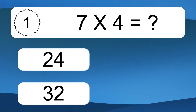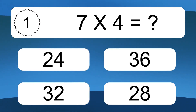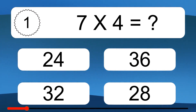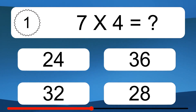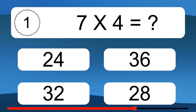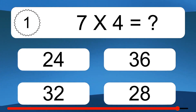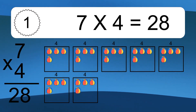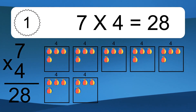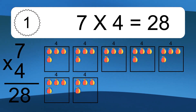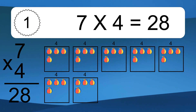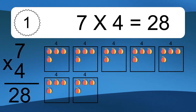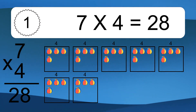7 times 4 equals what? 7 times 4 equals 28. We have 7 boxes, and each box has 4 colorful balls inside. If you count all the balls in all the boxes together, you will have 7 times 4 balls. This equals 28 balls.